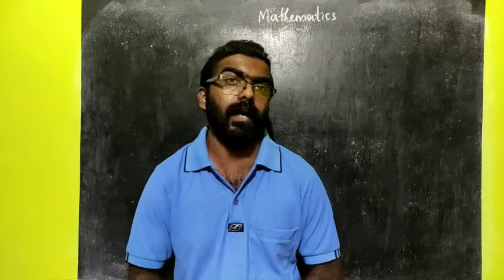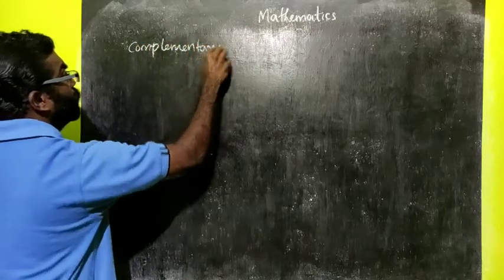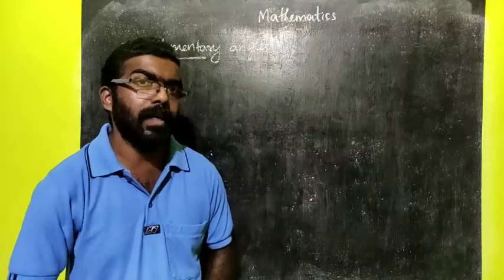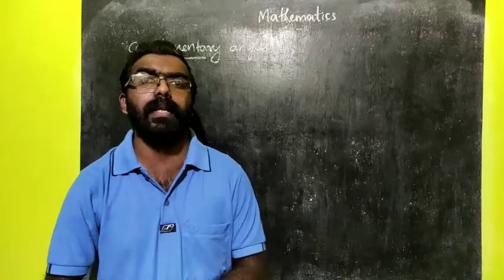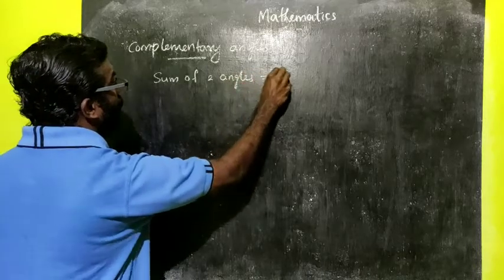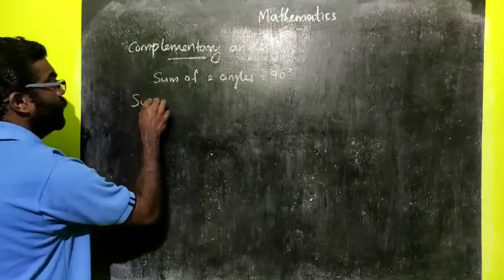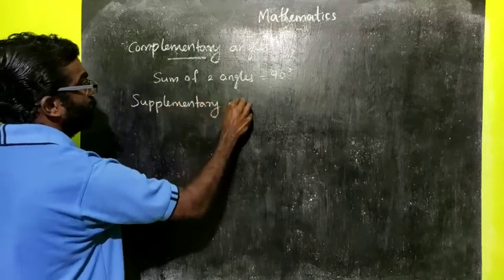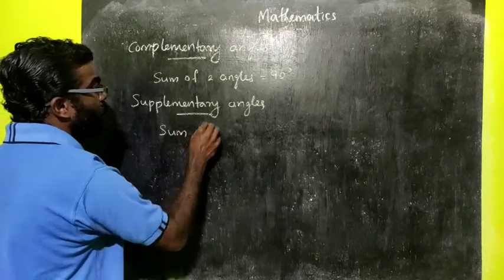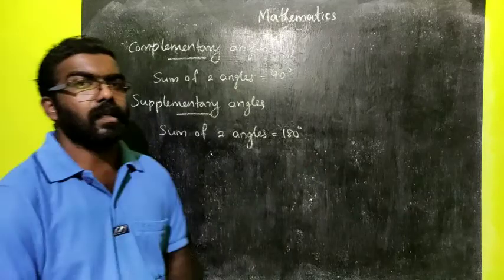Next we can discuss pairs of angles. First one is complementary angles. Complementary angles means two angles are said to be complementary if the sum of those angles is equal to 90 degrees. If the sum of two angles is equal to 90 degrees, then they are called complementary angles. Similarly, there is one more term — supplementary angles. Two angles are said to be supplementary if the sum of two angles is equal to 180 degrees.